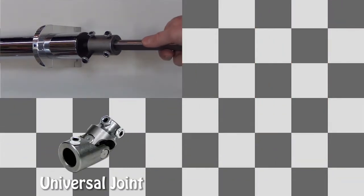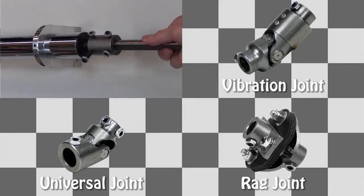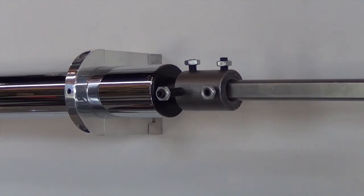You can do the same thing with a universal joint, or a vibration joint, or a rag joint, it doesn't really matter. But we want something on there to connect these two together, so we're not sliding the shaft up inside the hollow tube.